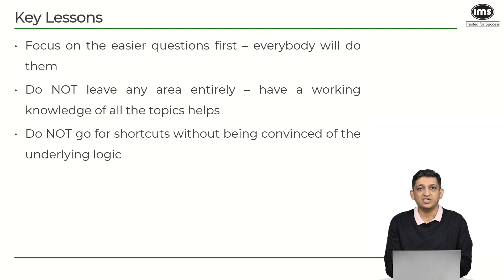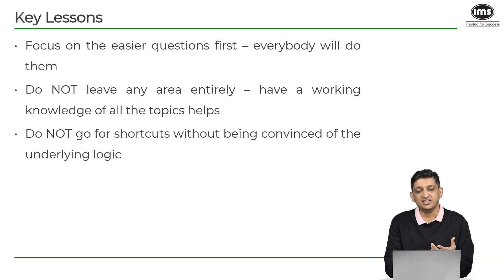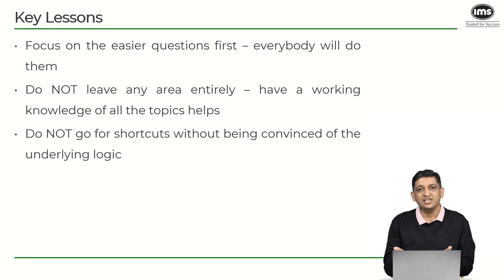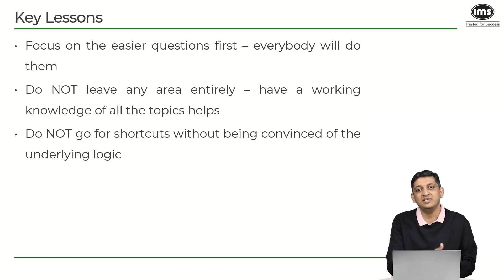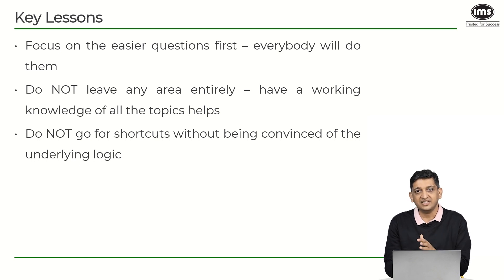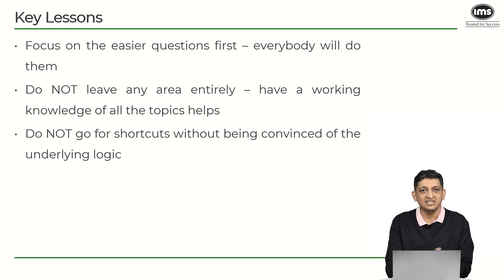The third lesson is: do not go for shortcuts without understanding the underlying logic. If you are not convinced of the underlying logic, you will never be able to apply the shortcut confidently or in the correct context. For example, if someone tells you the number of triangles with a certain perimeter is P-squared over 48, without understanding why, you cannot apply it correctly. Make sure the first time you learn a shortcut you understand why it works.